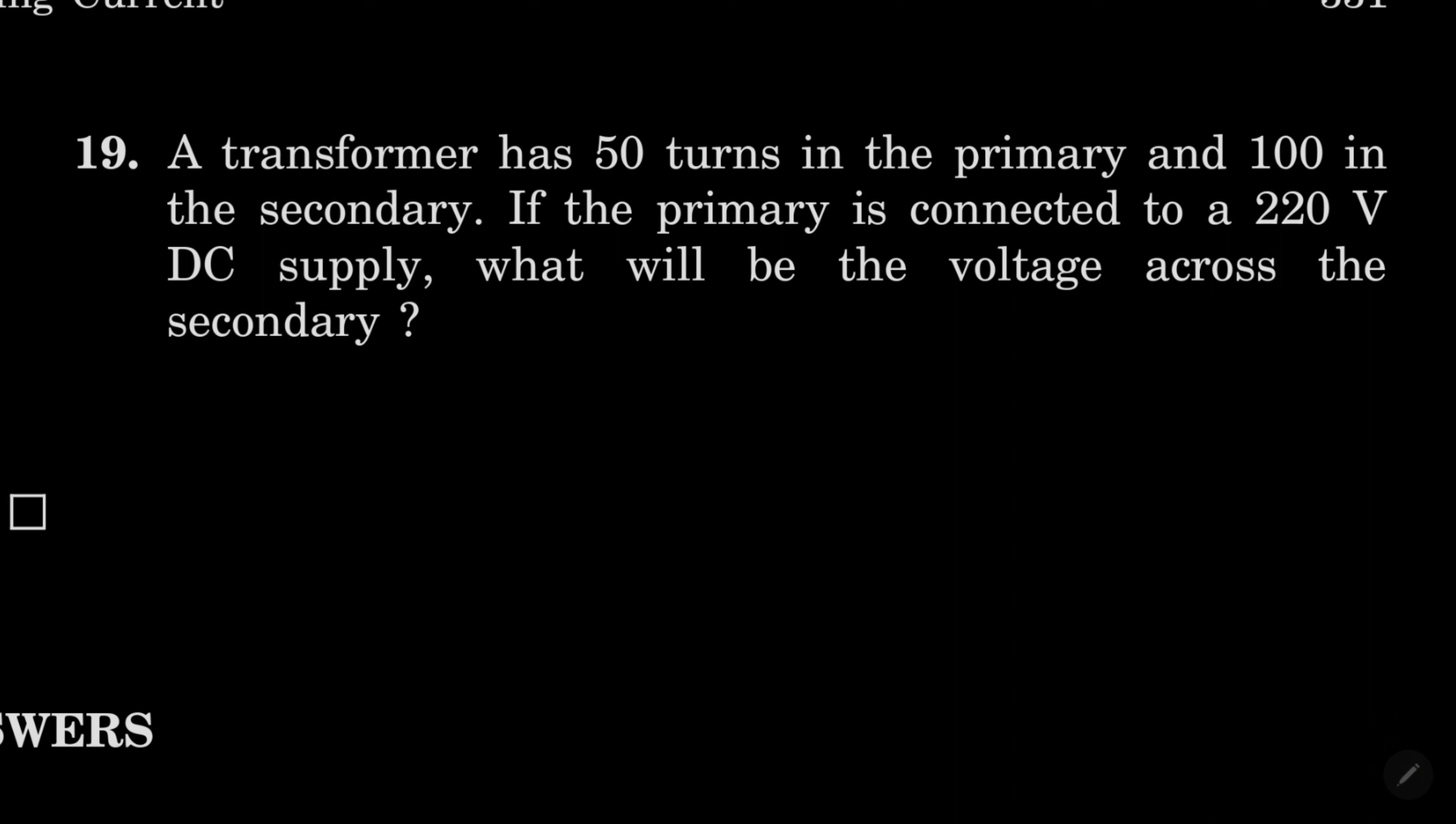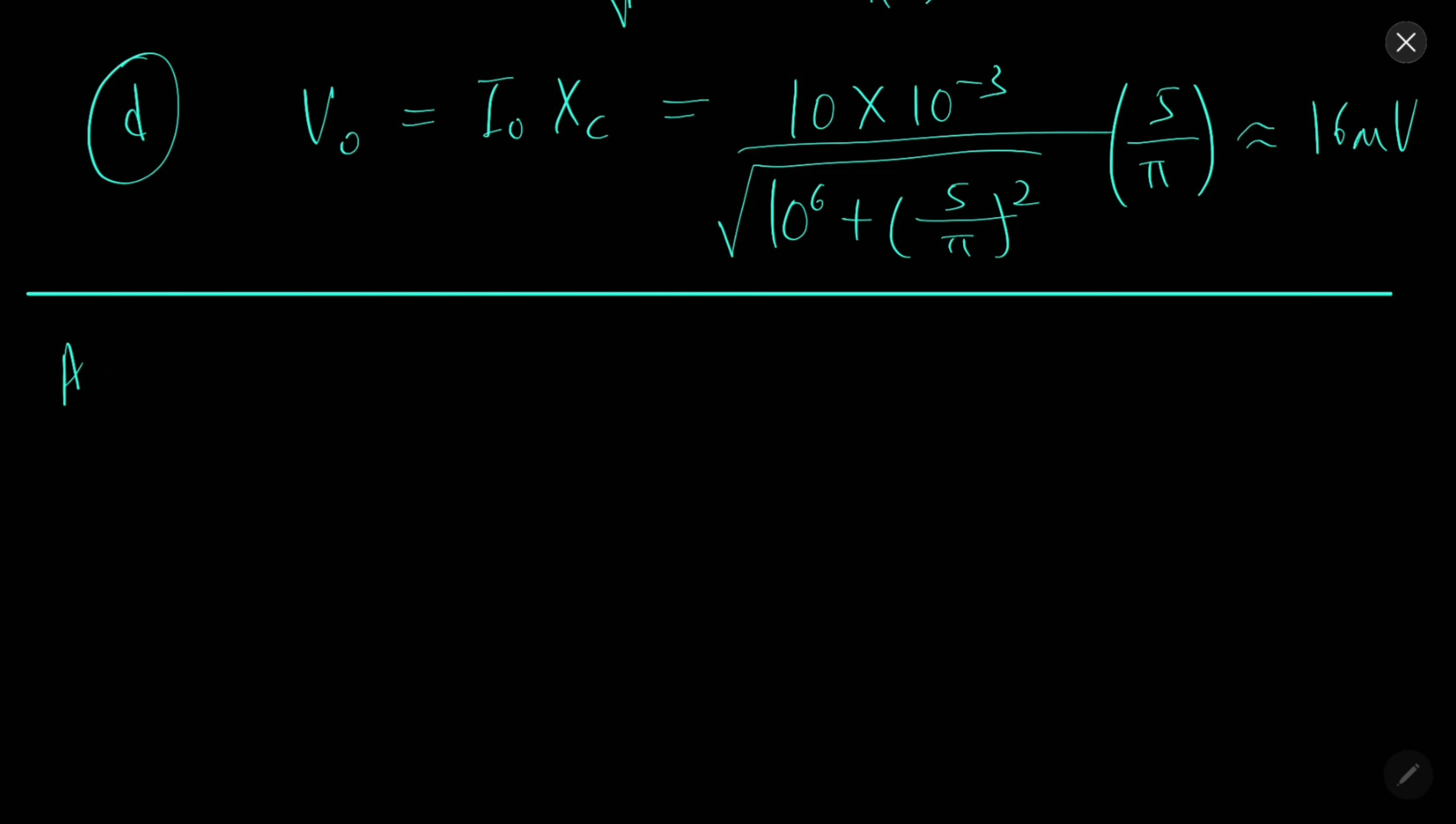In 19, what will be the voltage across the secondary? Solution 19: Transformer works on induction. DC is supplied, so there will be no induction. In secondary coil, induced EMF will be 0. Therefore induced current will be 0, because it is DC. We need AC for induction.